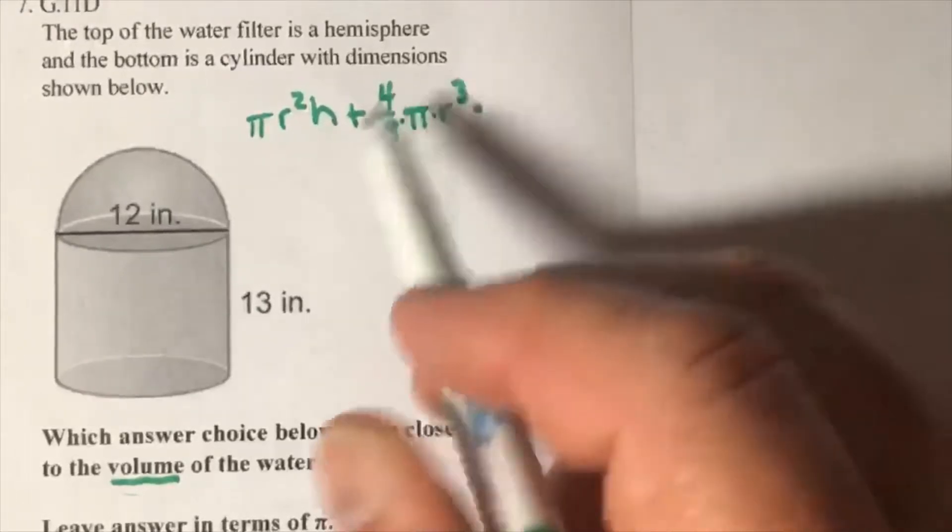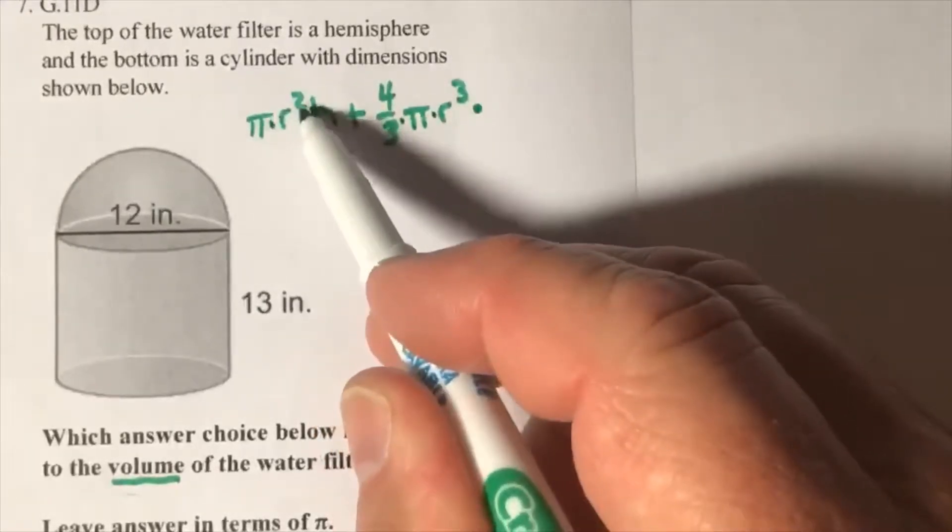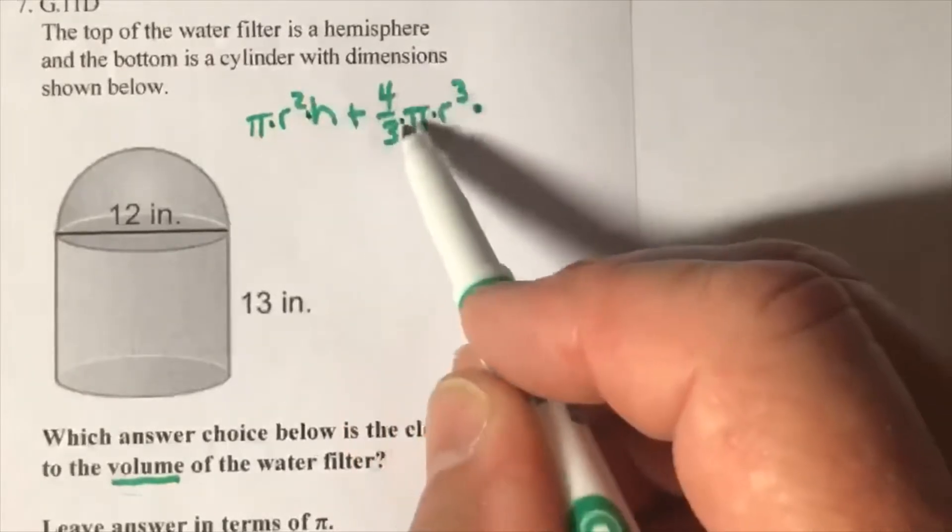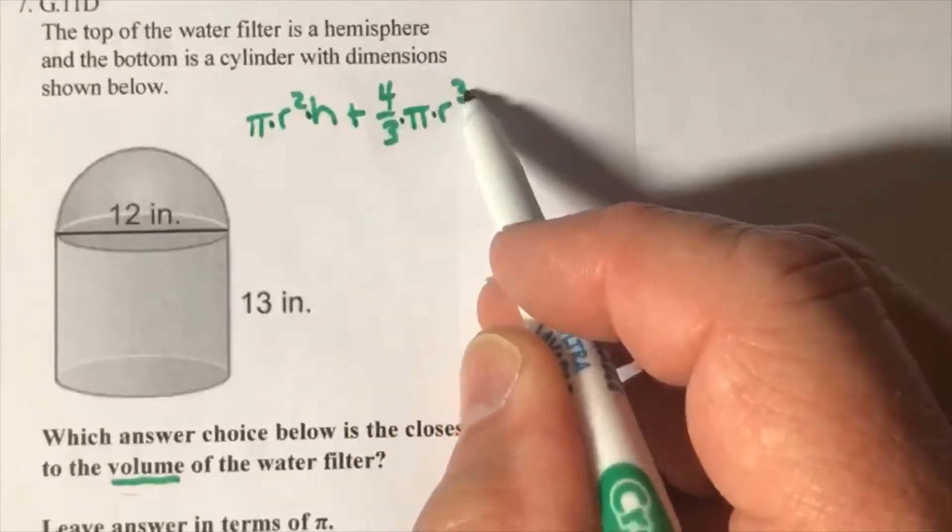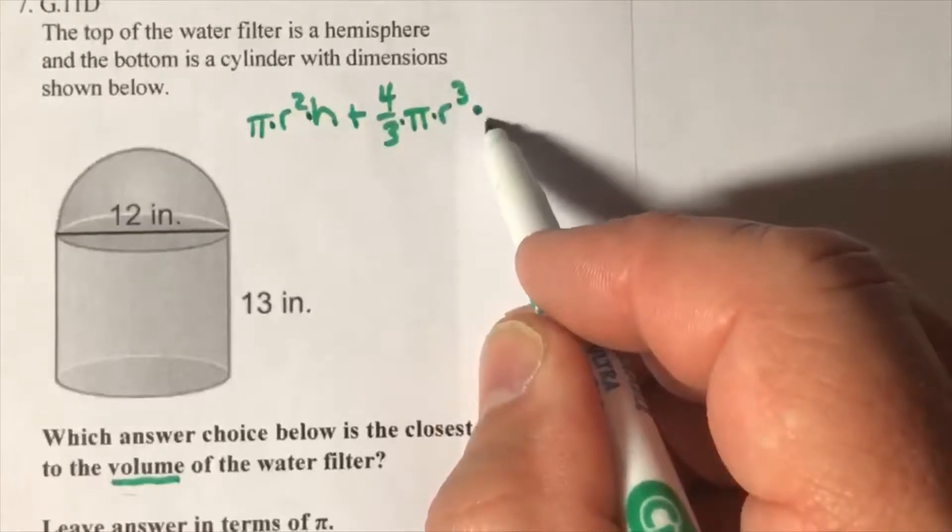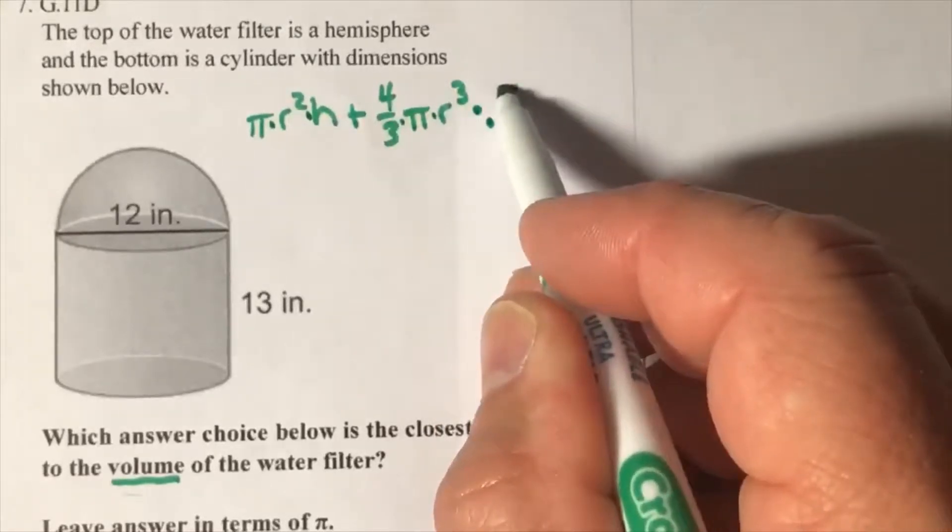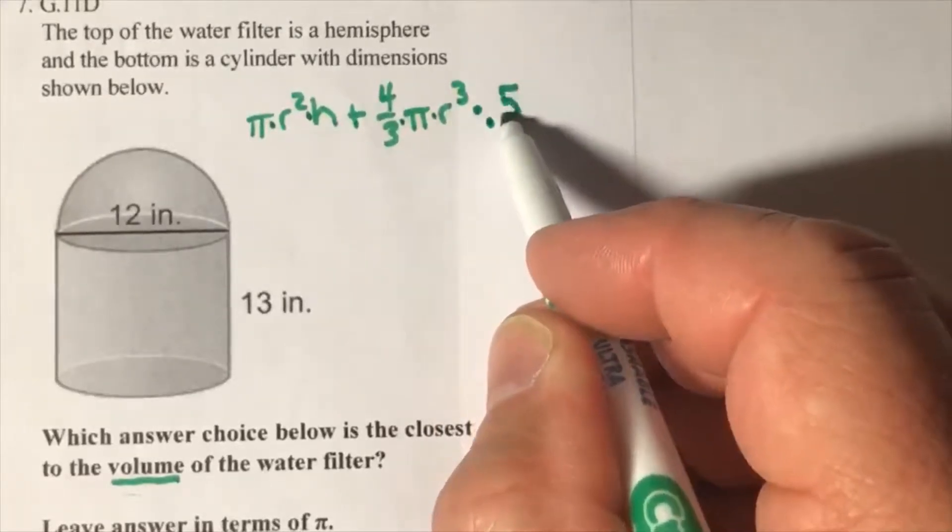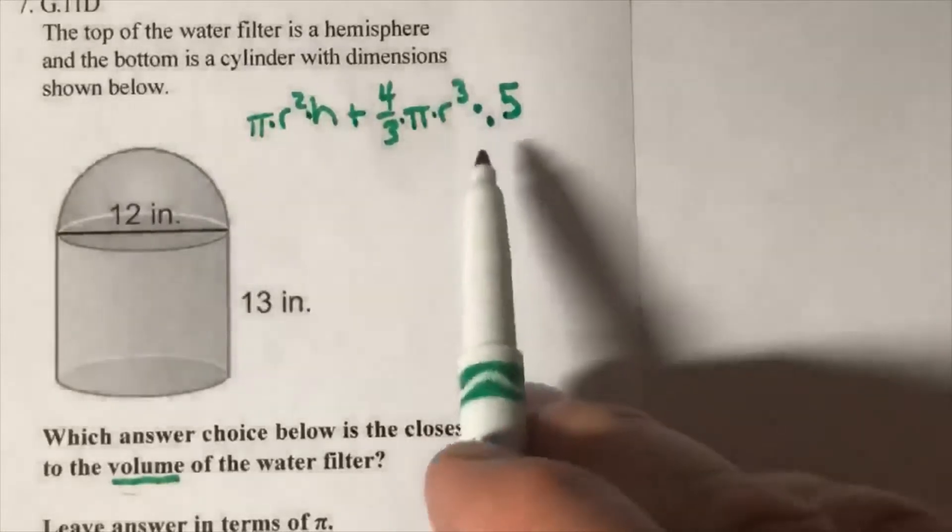All this gets multiplied: π times r² times h plus 4/3 times π times r³. And you can turn that one half, or dividing by two, into 0.5. That'll take care of the hemisphere.